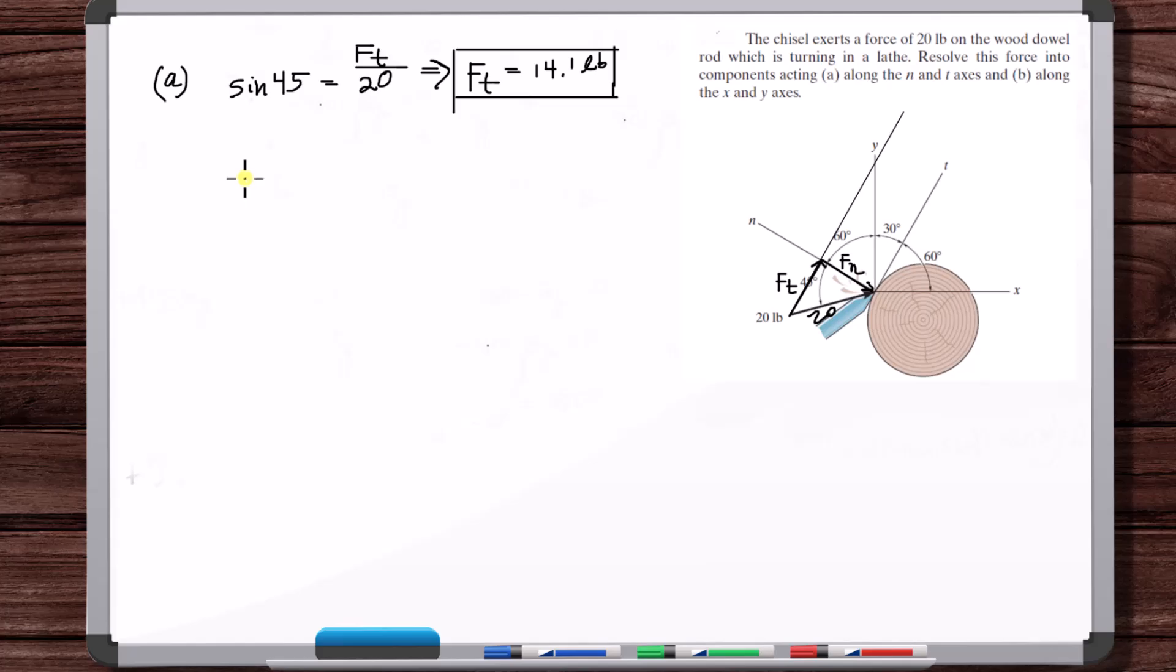Okay, so 20 times sine of 45 equals 14.1 pounds. Okay, so now we can do F_N, adjacent over hypotenuse, cosine of 45 is equal to F_N over 20. Now cosine of 45 and sine of 45 are the same, so this could be the same magnitude, but we could put negative 14.1 because it's in the negative direction.